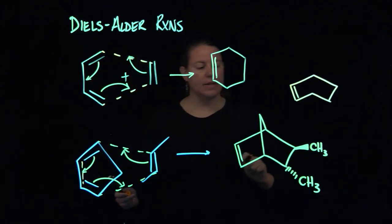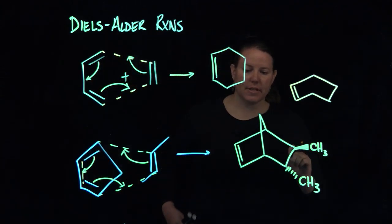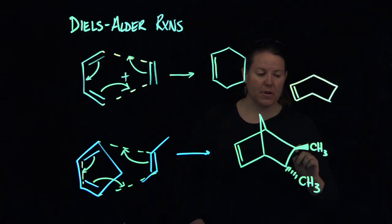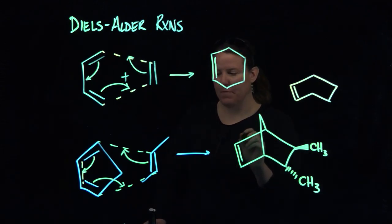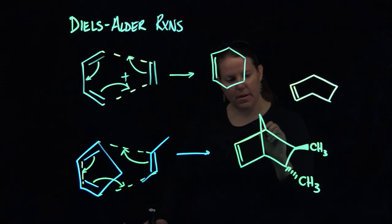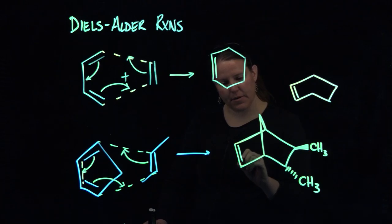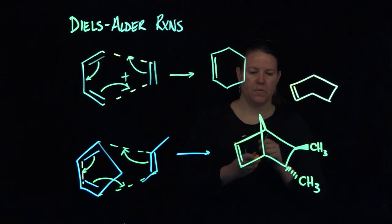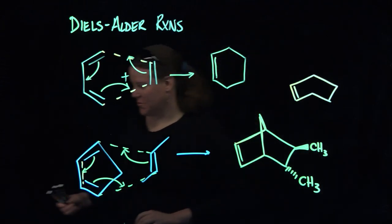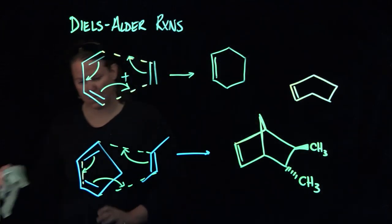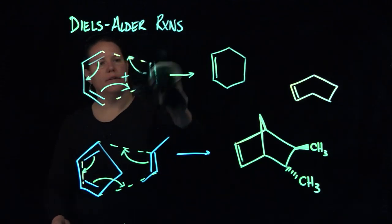There's my double bond that's right here. And if the dienophile was trans to begin with, it ends up being trans in the end. And then basically this is the five-membered ring that we had to begin with. Kind of crazy. Let's do one more.